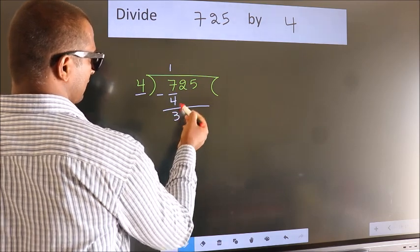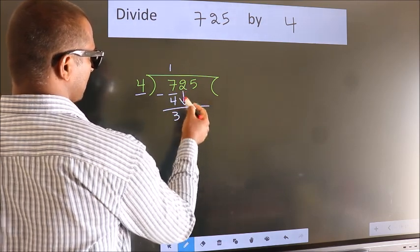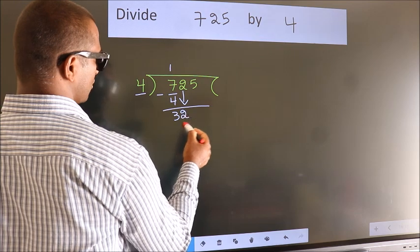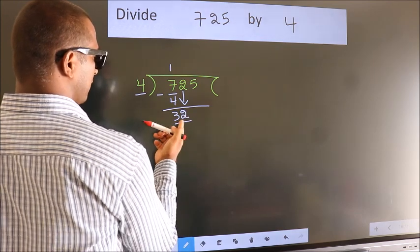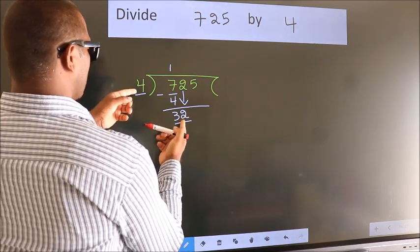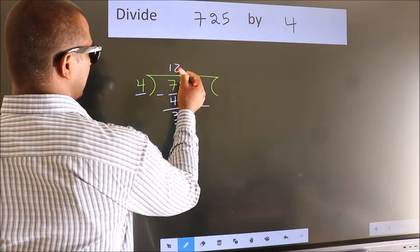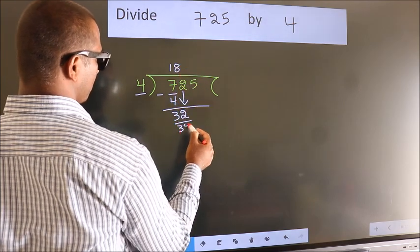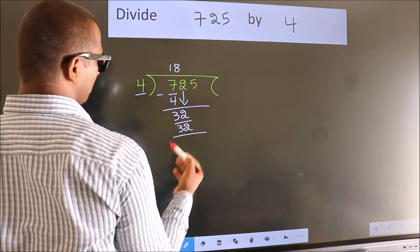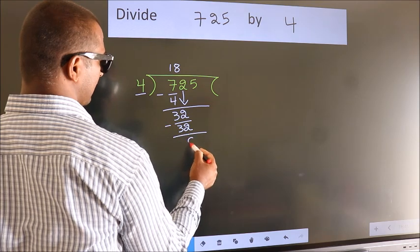After this, bring down the next number. So 2 down. So 32. When do we get 32 in the 4 times table? 4 times 8 equals 32. Now we subtract. We get 0.